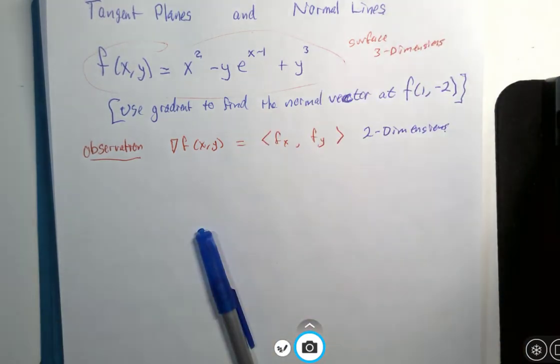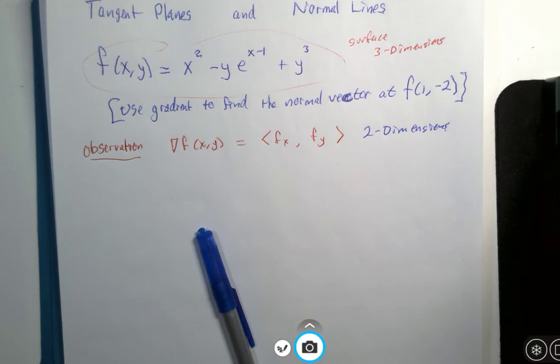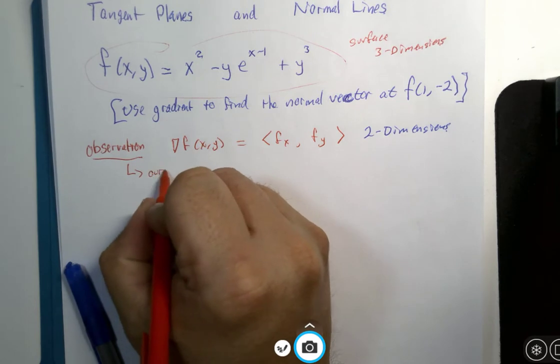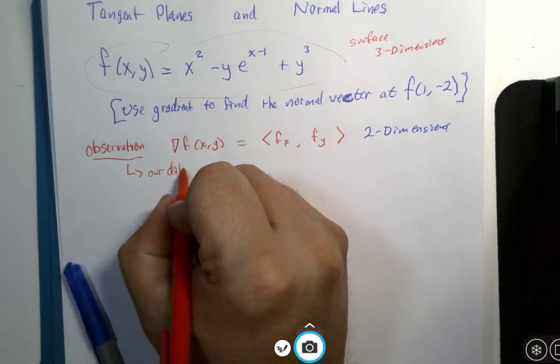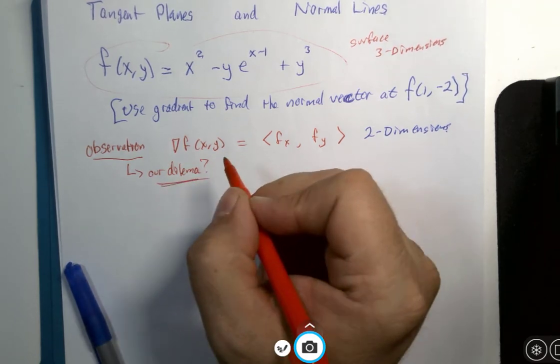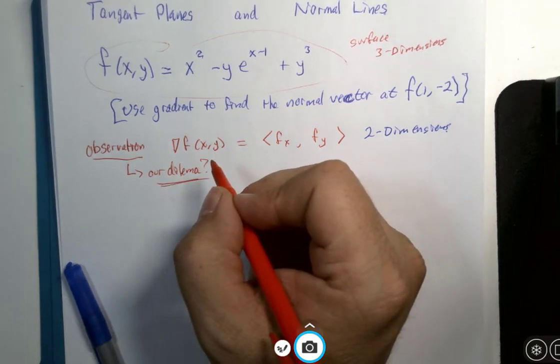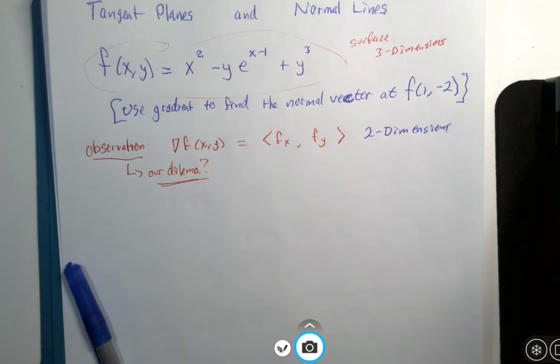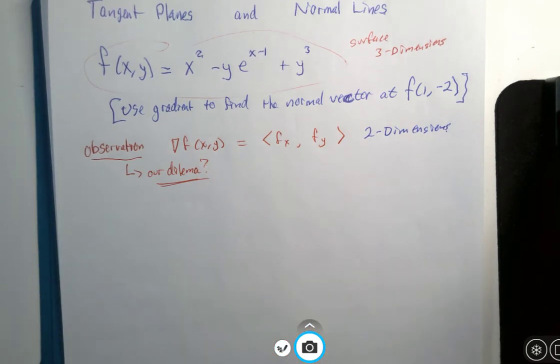In order to approach this question, I need three variables. So this observation is kind of like our dilemma, our problem. What are we going to do with this? I think I have a spelling error there. I'll leave it for you guys to attack that later on.